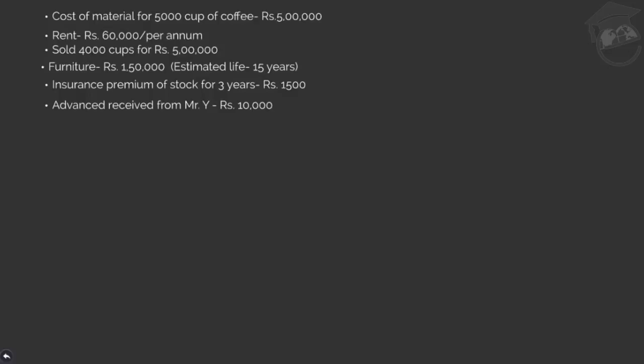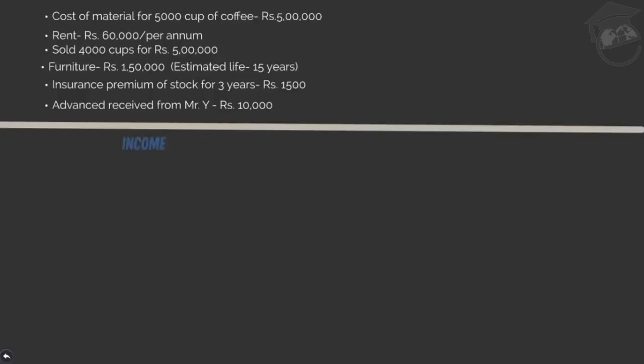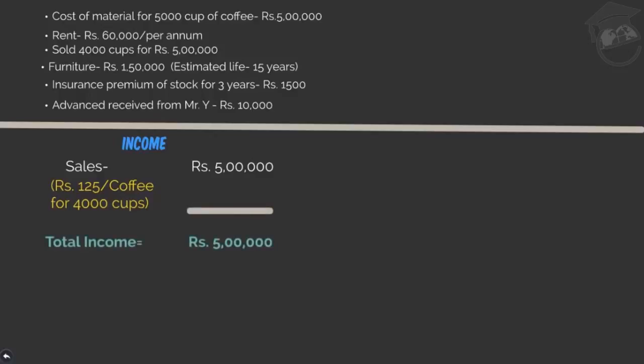My accountant friend goes through the data and starts calculating the profit or loss for the year. He first lists down all the income — sales of 4,000 cups of coffee which is Rs. 5,00,000, and notes that I am charging Rs. 125 per cup of coffee, because 4,000 × 125 = Rs. 5,00,000. He calculates total income as Rs. 5,00,000.